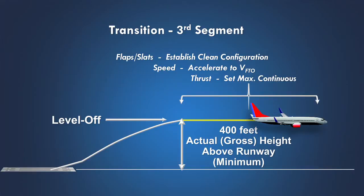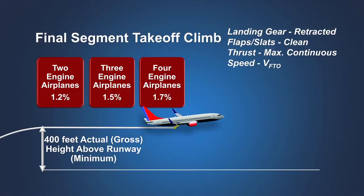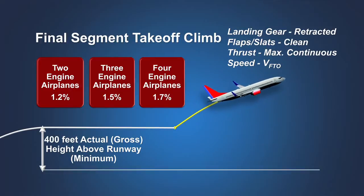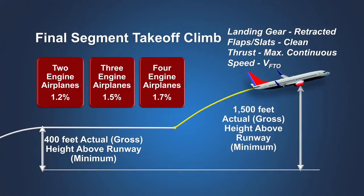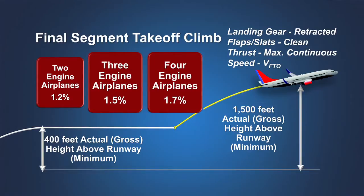The transition segment ends when the airplane is in the clean en route configuration at an airspeed of not less than VFTO and when the remaining engines are set to maximum continuous thrust. If the airplane is less than 1,500 feet above the runway surface at the end of the transition segment, then the final takeoff segment begins at that point and extends until the airplane reaches at least 1,500 feet. At any point above 400 feet, a turbine-powered airplane with two engines must be capable of achieving a minimum climb gradient of 1.2% in still air.